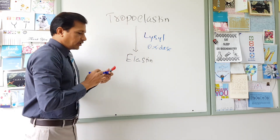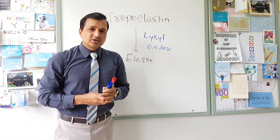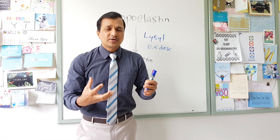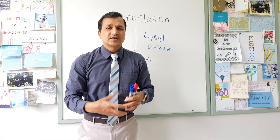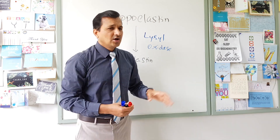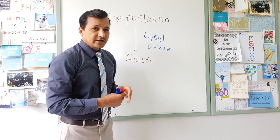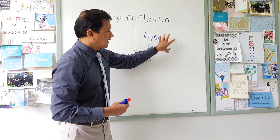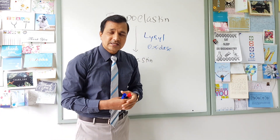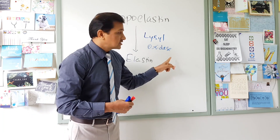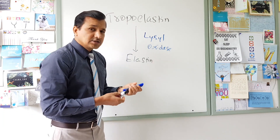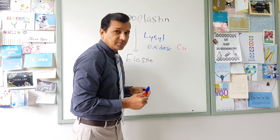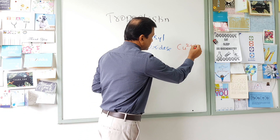How do you get tropoelastin? Tropoelastin is secreted by fibroblasts into the extracellular matrix. Once tropoelastin is in the extracellular matrix, it is converted into elastin by the enzyme lysyl oxidase. Note that this is an extracellular matrix enzyme and it needs copper (Cu2+) as a cofactor.